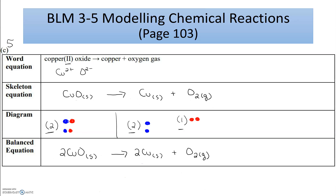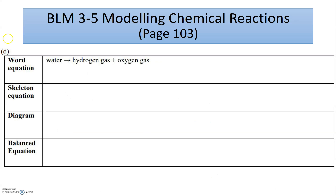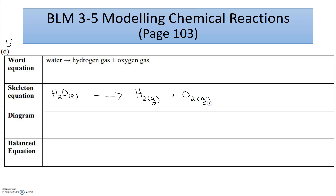Let's look at the next example — pause if you need to. Question 5d: water is reacting to make hydrogen gas and oxygen gas. Water's formula is H₂O and it's a liquid, so I put the state (l). It reacts to make hydrogen gas — hydrogen is a diatomic element so it has a subscript of 2 — plus oxygen gas, which also comes in pairs.